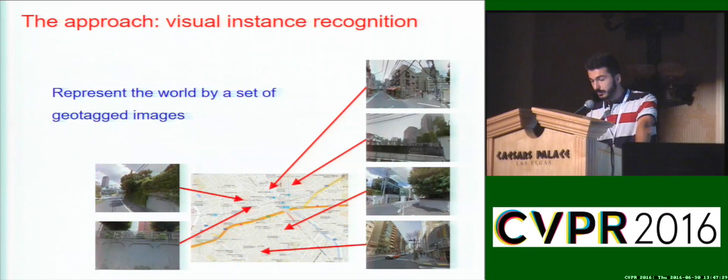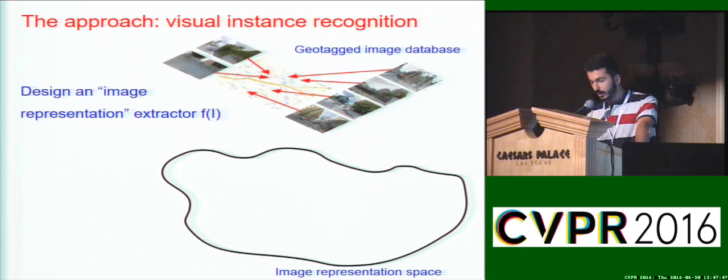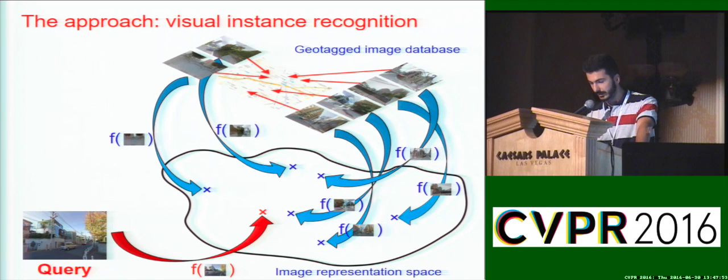The most popular approach is to cast place recognition as visual instance recognition. Namely, the world is represented as a set of geotagged images. We then design an image representation extractor function, which provides a mapping from an image to an image representation space. All database image representations are extracted offline, and given a new image, we extract its representation, find the closest database representation, and transfer its location.